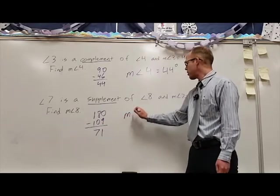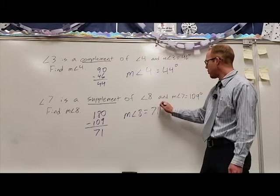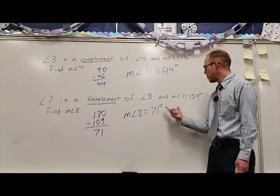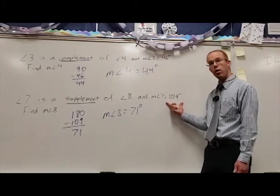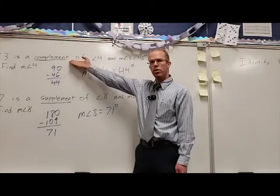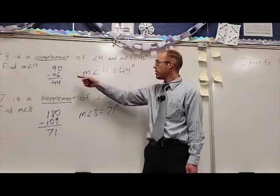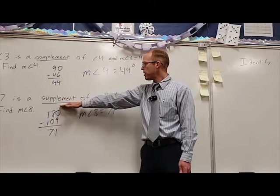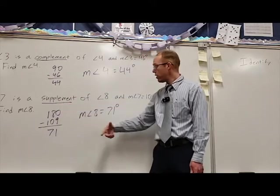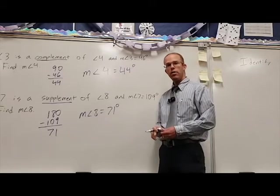So the measure of angle 8 has to be equal to 71 degrees to get these two angles to add up to 180 degrees. So we've got complement which adds up to 90 degrees. 44 and 46 add up to 90 together. And supplement adds up to 180 degrees. 71 and 109 together add to 180 degrees.